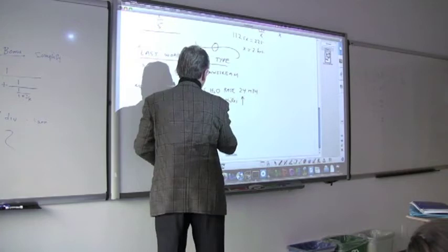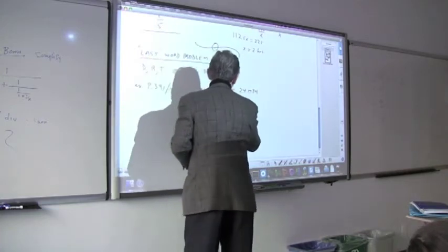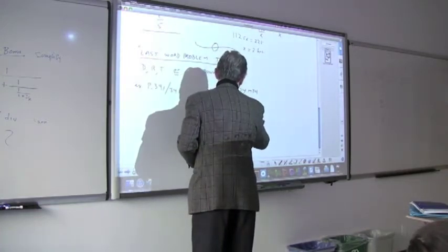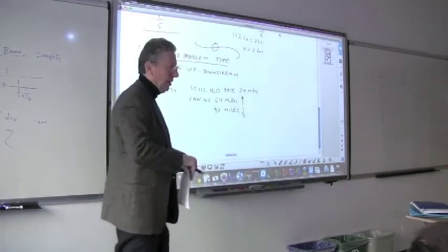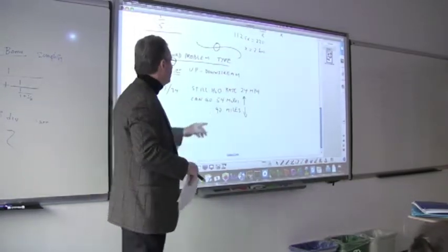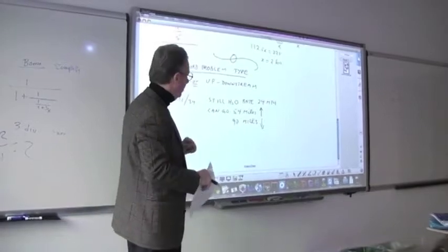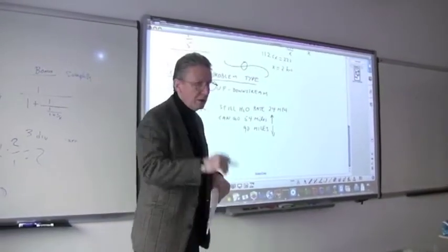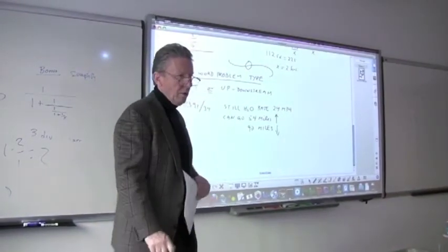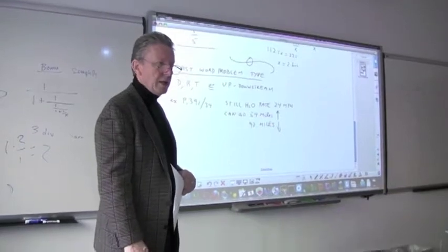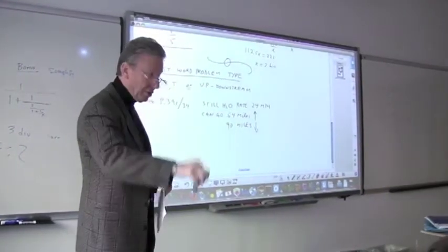In the same time as it goes 90 miles downstream. First of all, does that make sense? Yeah. Physically, right? Upstream means it's going against the current. But you only have one variable. You have two unknown variables here, the time that the boat is going and the speed. Well, let us see. Let's see if that's in fact true.